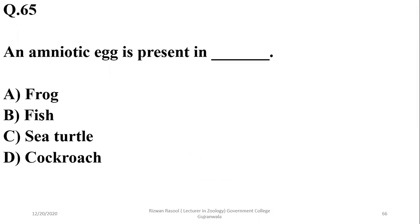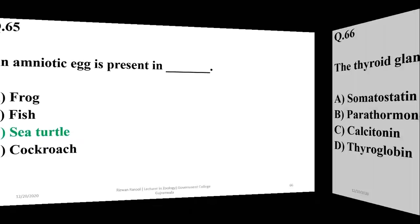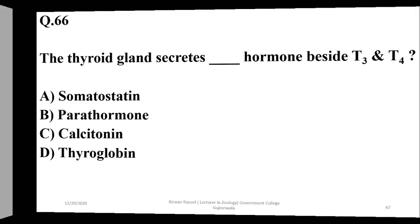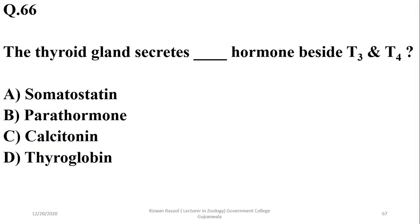Question 65: An amniotic egg is present in reptiles, birds, and mammals — so this is a representative member of reptiles, option C. Question 66: The thyroid gland secretes, besides T3 and T4, calcitonin — option C.